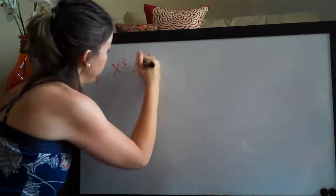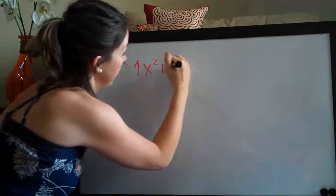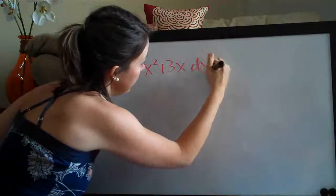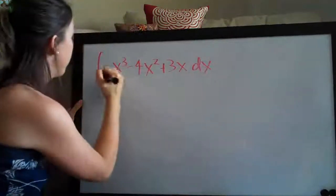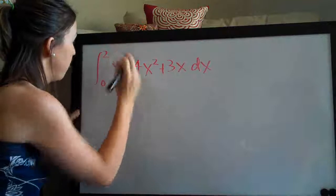Hi everyone! Welcome back to integralcalc.com. Another definite integral problem. This one is the integral of x cubed minus 4x squared plus 3x dx and we're going to be evaluating on the range 0 to 2.